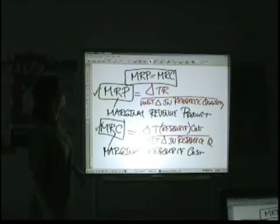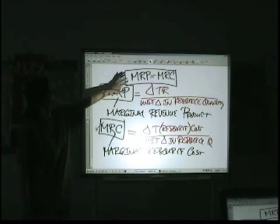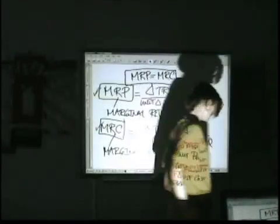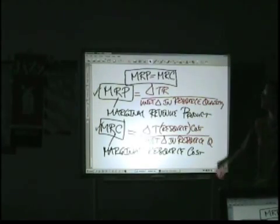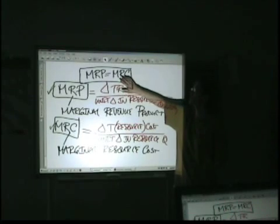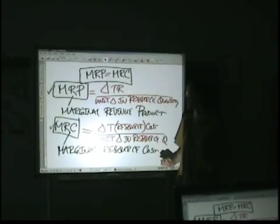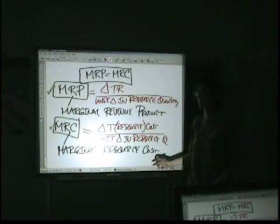Why is that? If marginal revenue product is greater than marginal resource cost, then that says, hey, we can keep employing additional units of that resource because we're still making more than we're spending. If on the flip side, the firm says, wait a minute, for that additional unit or five units of labor, we're spending more than we're making, we need to cut back.